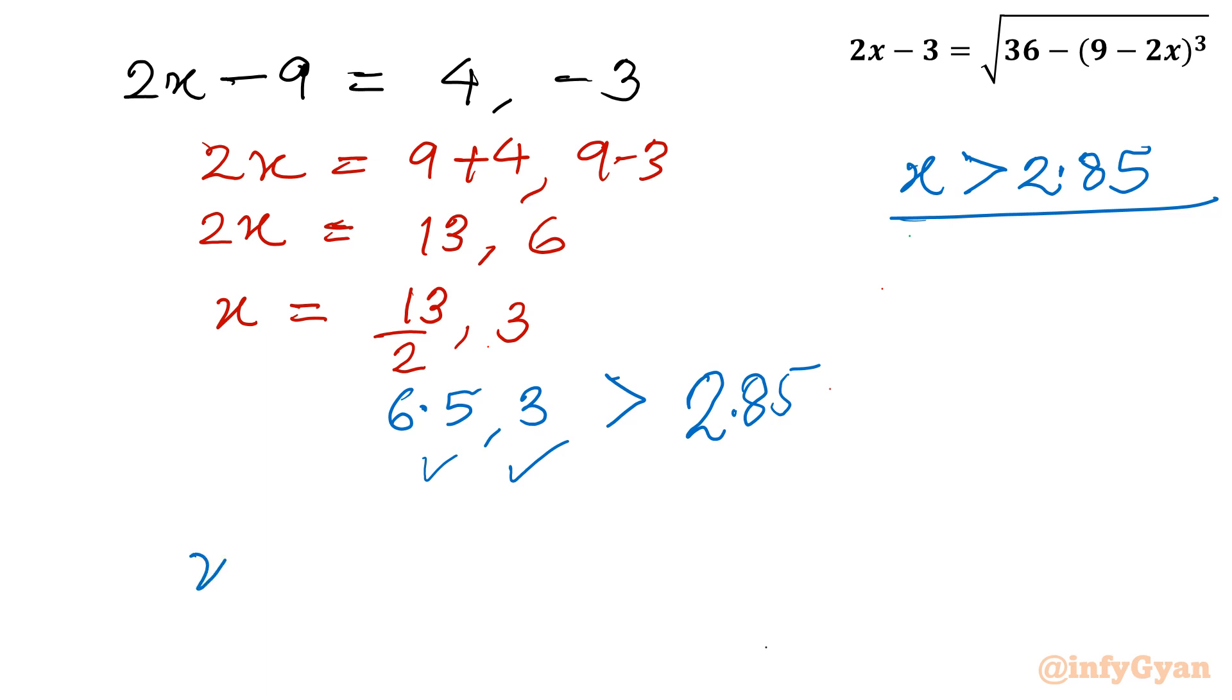So our final ultimate solution would be 13 by 2, which is 6.5, then 3, and the very first one was 9 over 2, which is 4.5.